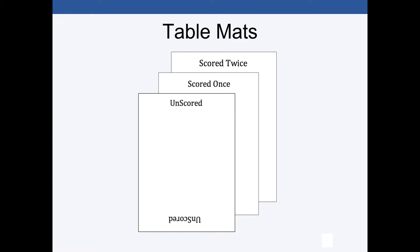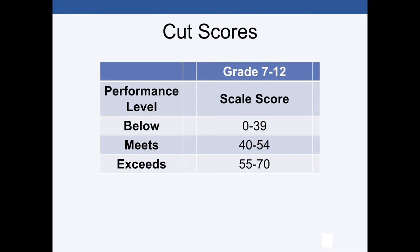Also, tools you have are the table mats — unscored, scored once, and scored twice. They're pretty self-explanatory. Unscored means these student papers have not been scored by any rater. Scored once means one rater has scored that paper. Scored twice means two raters have scored that student sample. These are the cut scores for the performance levels: if a student's scale score is between 0 and 39, they are declared low; between 40 to 54, they're declared meets; and if they're 55 to 70, they exceed.